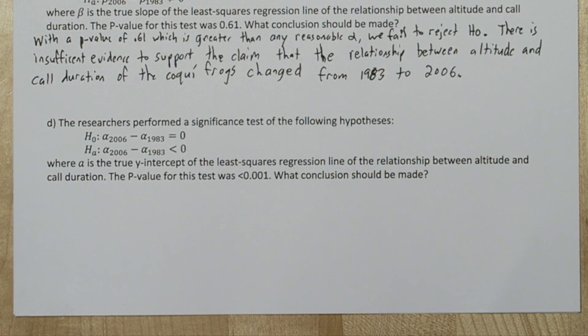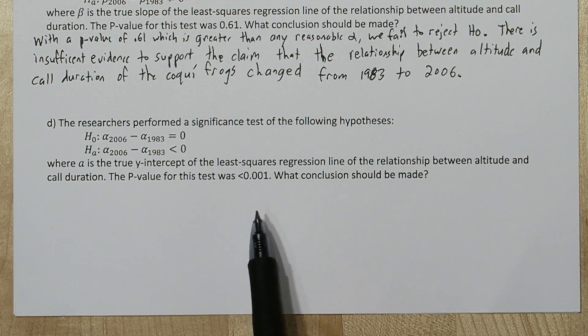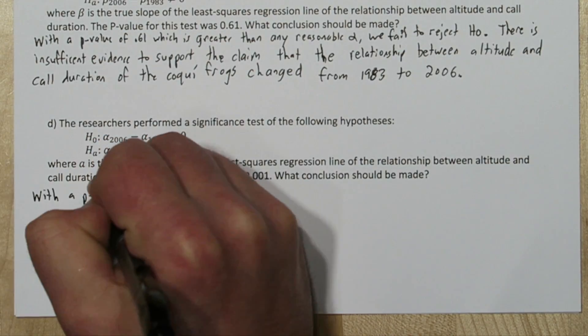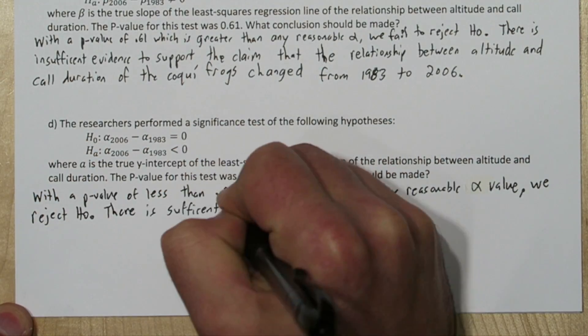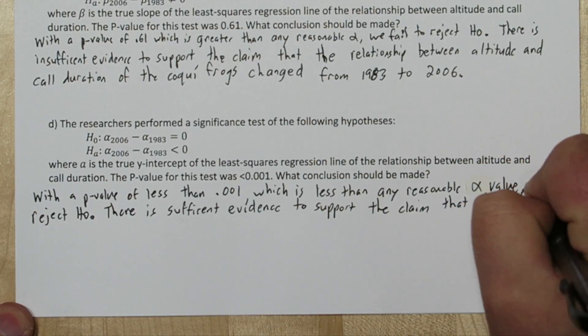So when the researchers tested to see if the y-intercepts had changed, they got a p-value of less than 0.001. So with a p-value of less than 0.001, which is less than any reasonable alpha value, we reject the null hypothesis.